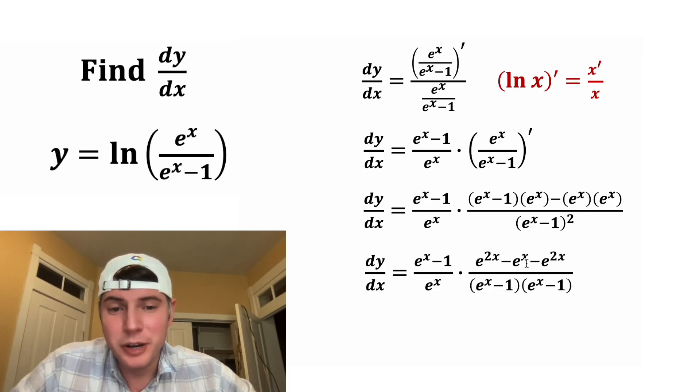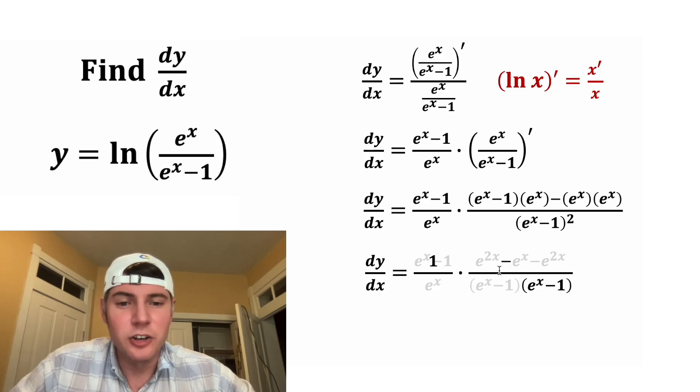And on top here, e to the 2x minus e to the 2x. Those are going to cancel each other out. And this e to the x minus 1 and this e to the x minus 1 can also cancel each other out. And since there's nothing remaining here, we'll put a 1 placeholder. And this e to the x and this e to the x can also cancel each other out. And they're both going to need 1 placeholders.